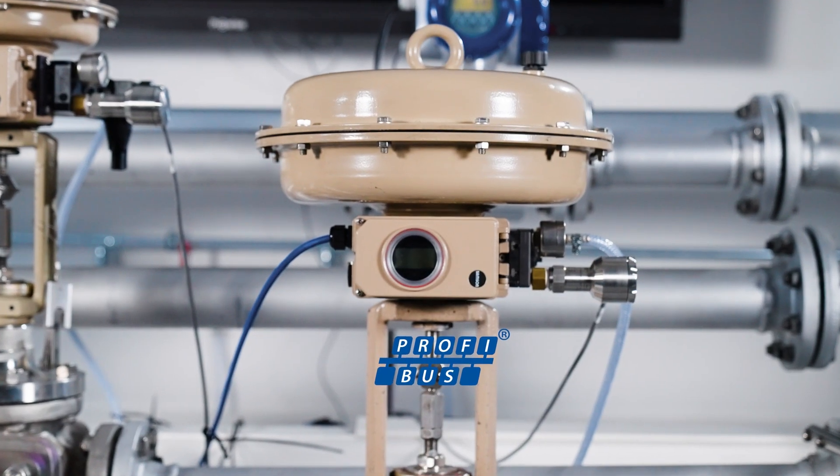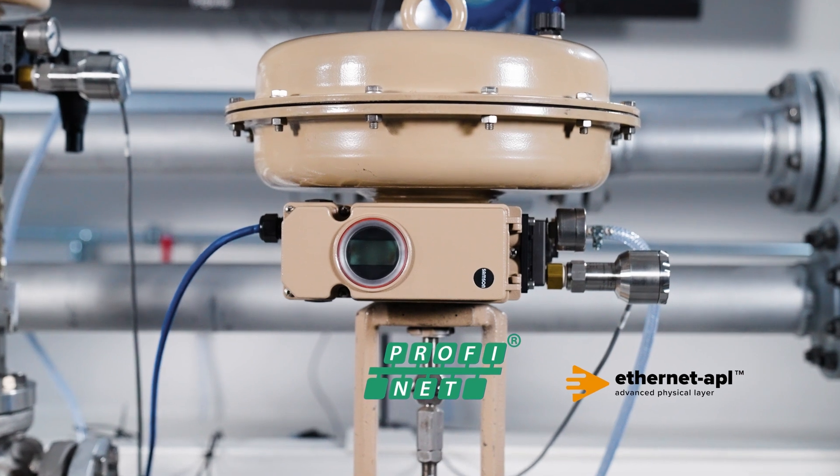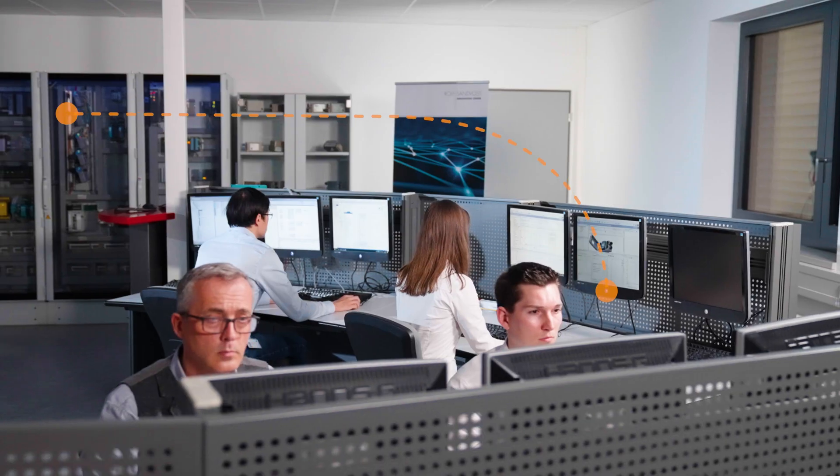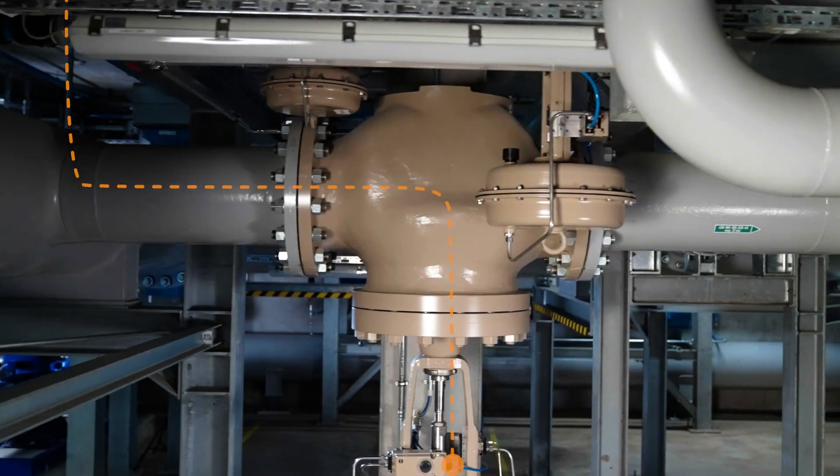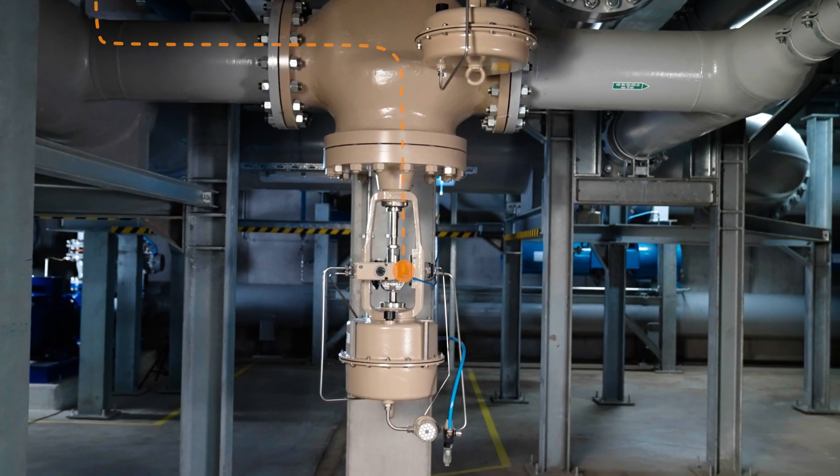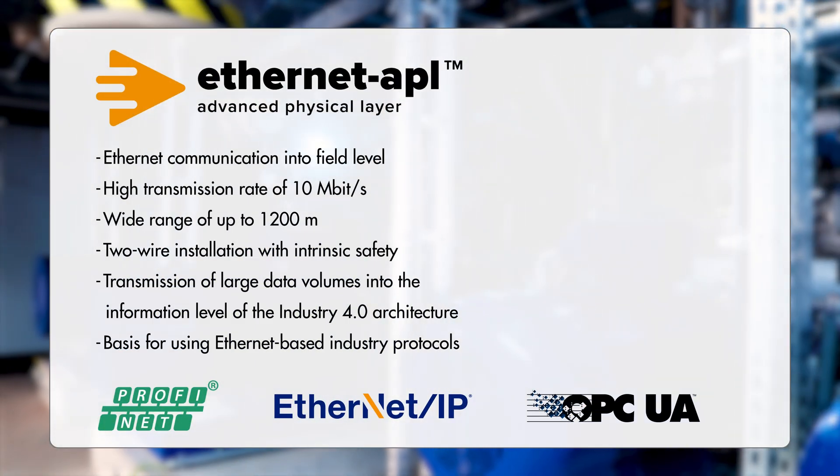Now we are ready for the next step. Fast PROFINET communication based on Ethernet APL. One protocol from the control system to the positioner with fast Ethernet communication allows continuous digitization of process plants for the first time.